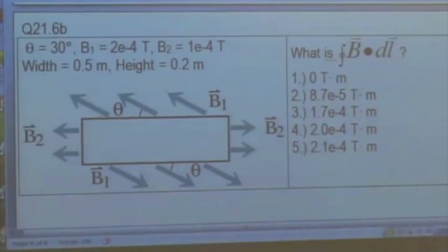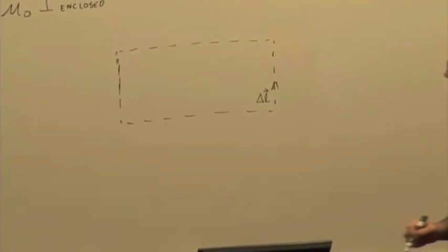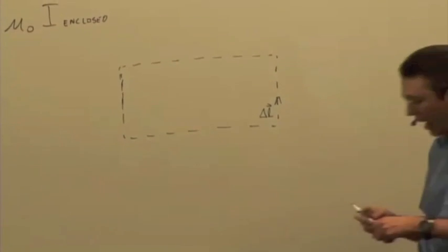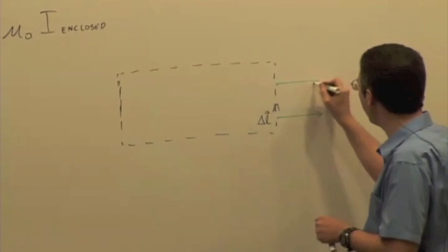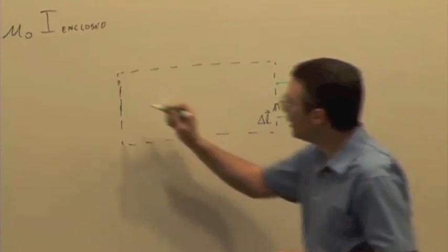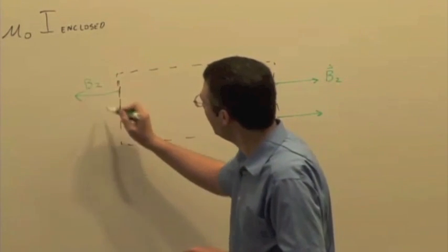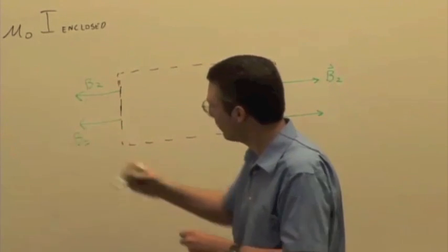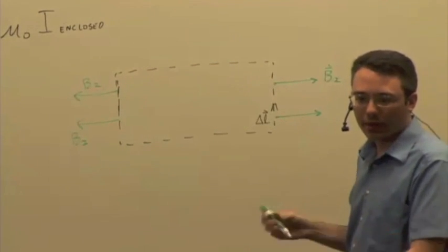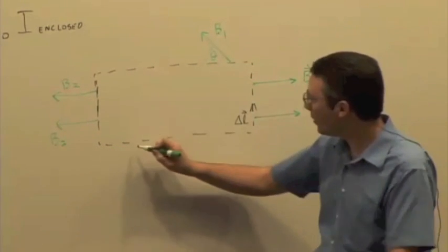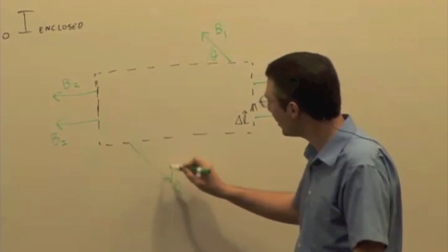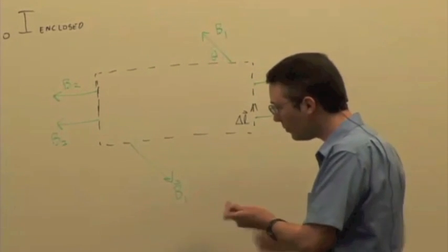And so here's our path, and I'm going to pick, again, a counterclockwise direction for my round trip integral here. We talked last time about how you have to break this up into each individual segment. We have B2 pointing that way, and on the other side, B2 pointing that way. And on the top, we have B1 making an angle theta with our path, and then on the bottom, B1 is in the opposite direction, but it still makes an angle theta with the path.